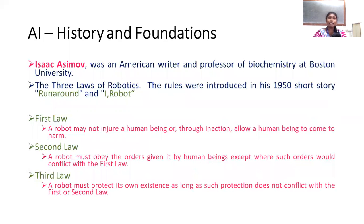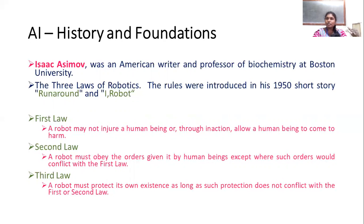In the 1950s, awareness grew. Isaac Asimov, an American writer and professor, designed rules for robots. He developed three laws of robotics: a robot may not injure a human being; a robot must obey the orders given by human beings; and a robot must protect its own existence.